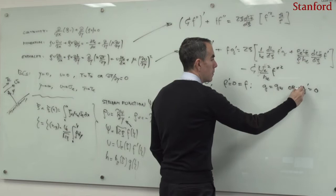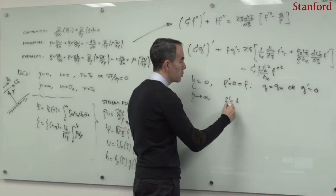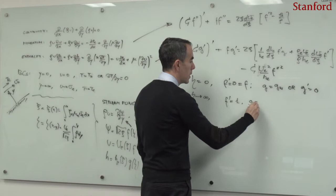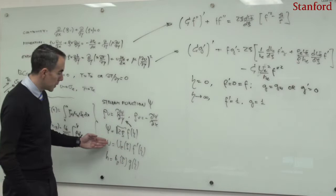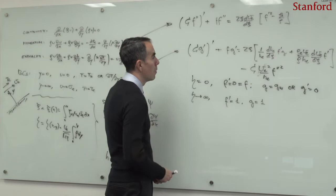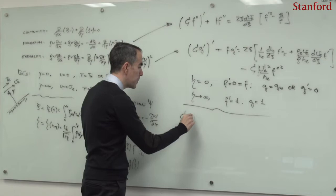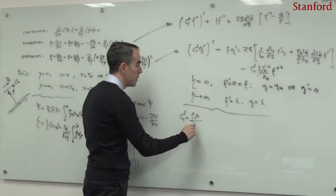At eta tending to infinity, f' needs to equal 1 to recover the edge velocity, and g needs to equal 1 to recover the edge enthalpy. There is also a parameter c in this problem, called the Chapman-Rubessin parameter, given by rho*mu divided by rho_w*mu_w.